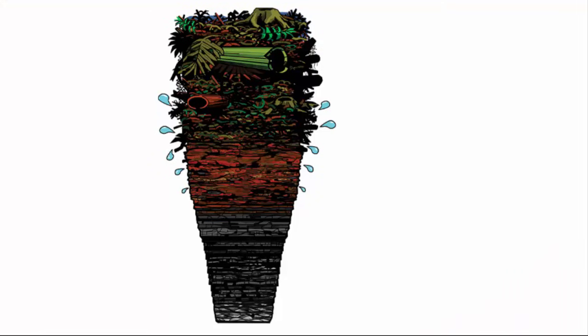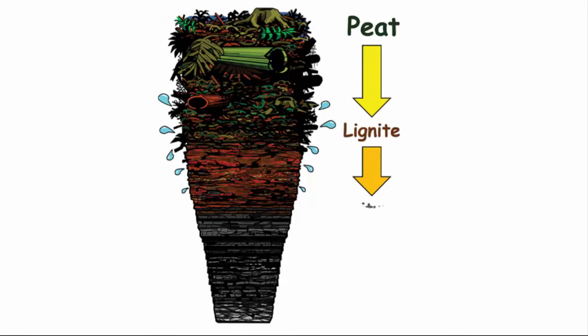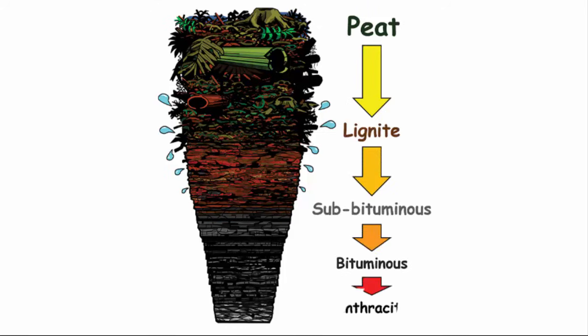Basically there are five types of coal and they are peat, lignite, sub-bituminous, bituminous, and anthracite. Let me show you all these stages through an illustration.